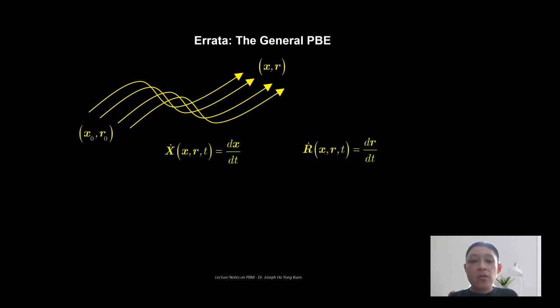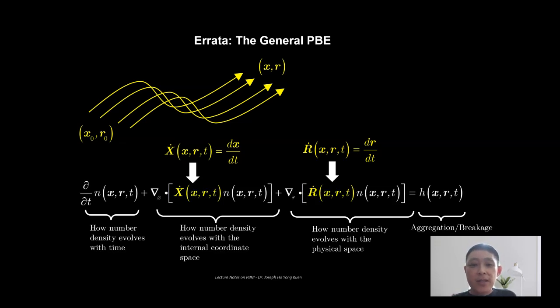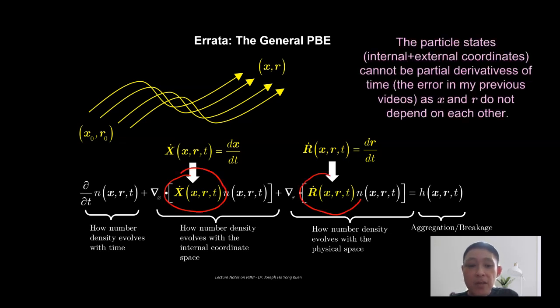These two equations, which represent the velocity of the particle through the internal and external coordinate space, should be the term that is in the general population balance equation, which is highlighted in yellow here. So this should be the term that is in the general population balance equation and not the ones that I have presented in my previous video.